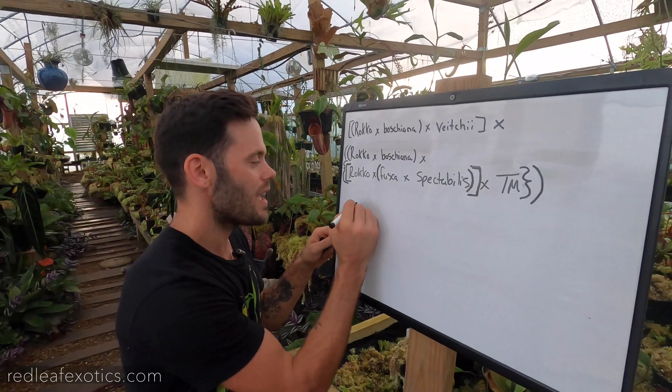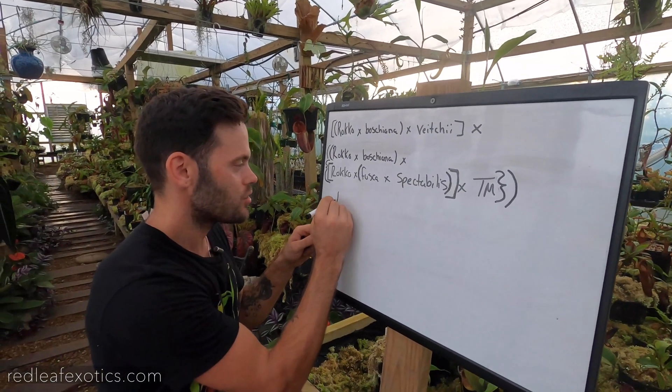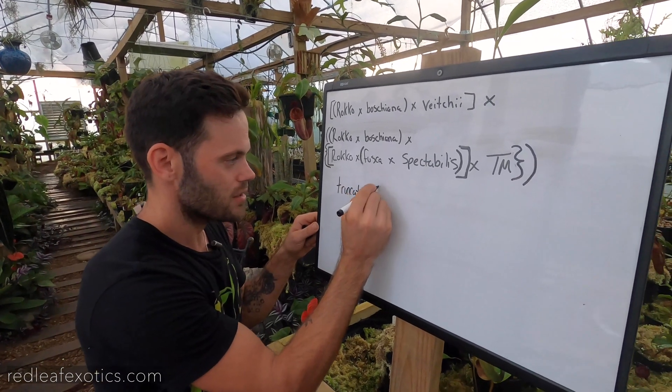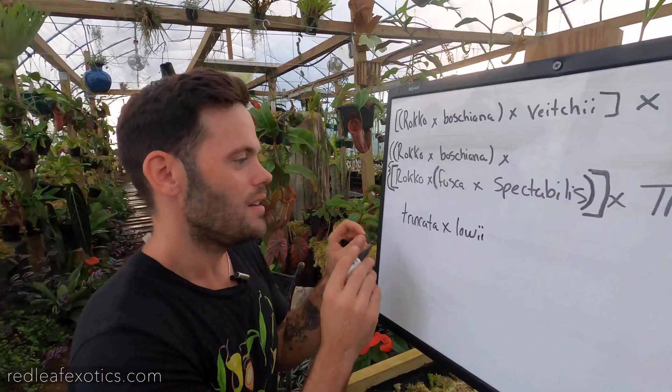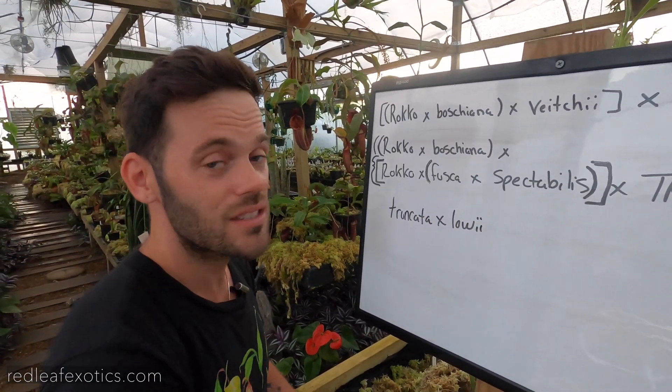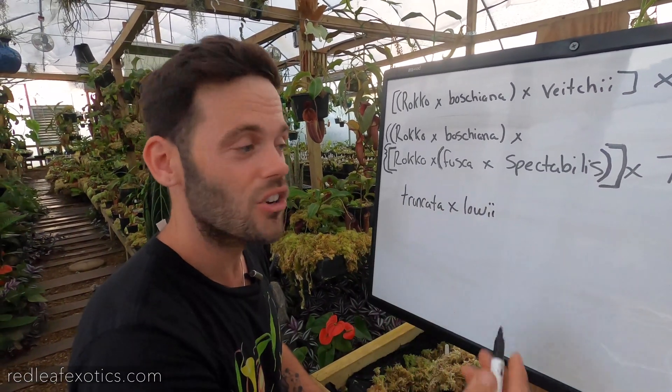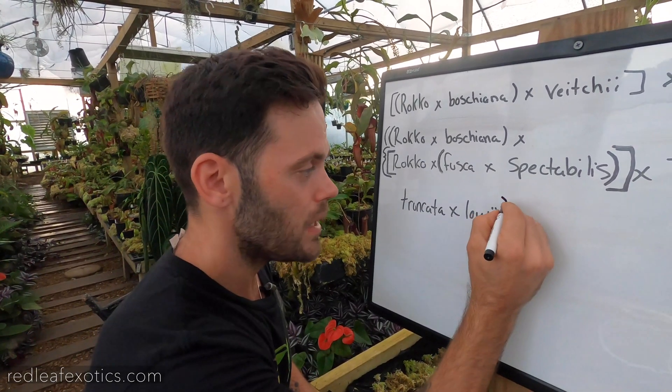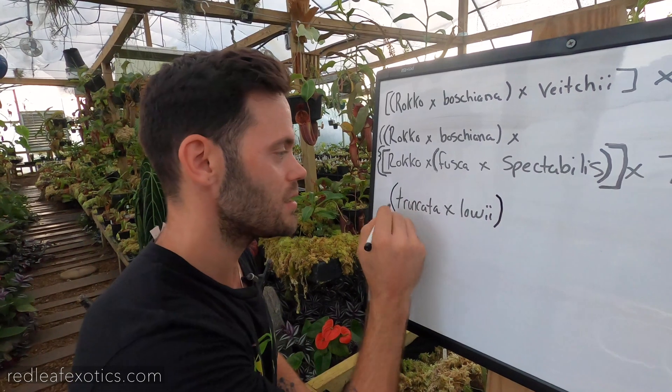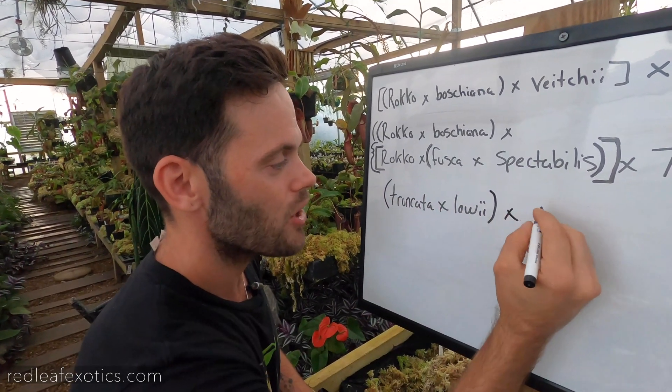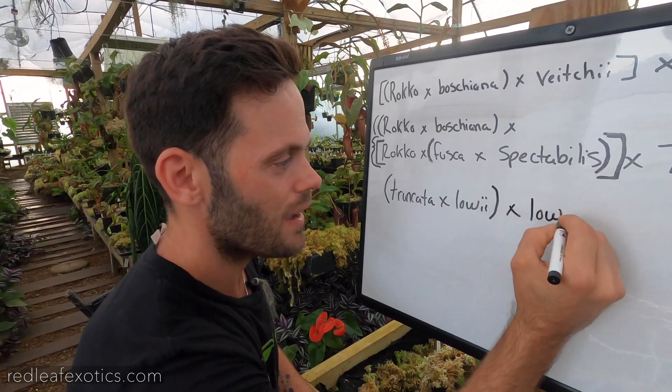So let's say EP did Truncata crossed with Loeii. And then that is the hybrid they had, Truncata-Loeii. Then say they got their Truncata-Loeii and they crossed it with Vichii. To add it to something, you would immediately have to put it in parentheses to signify that that alone is a hybrid. And then you would cross it. Let's cross it back with Loeii.